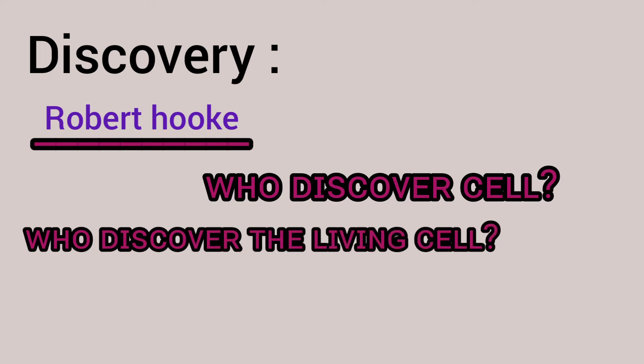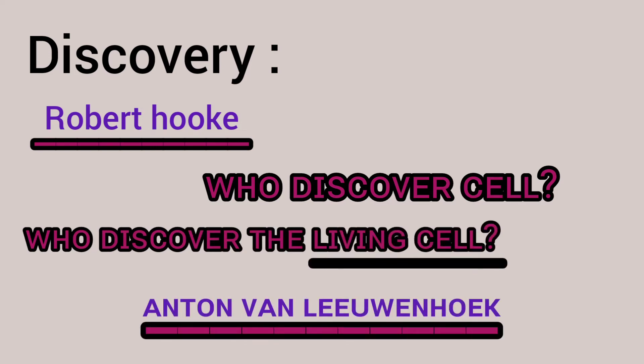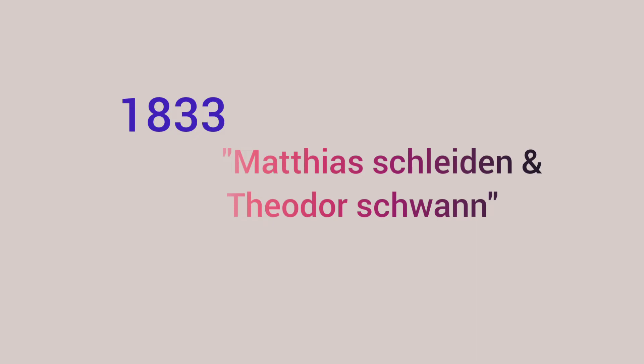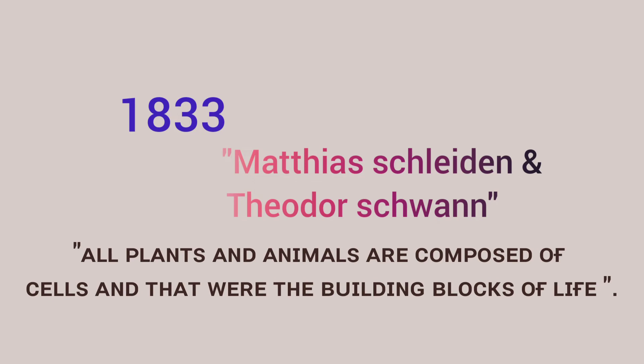But Robert Hooke had observed dead tissue. Who discovered the living cell? Antonie van Leeuwenhoek discovered the living cell. In 1833, Matthias Schleiden and Theodor Schwann established that all plants and animals are composed of cells, and cells are the building blocks of life.